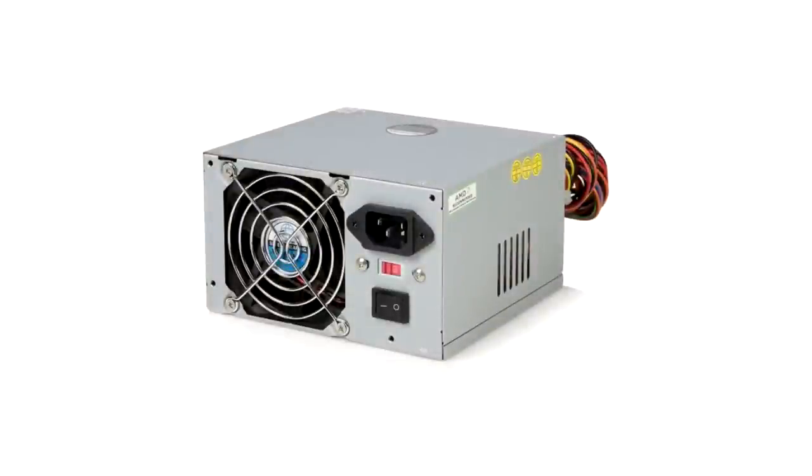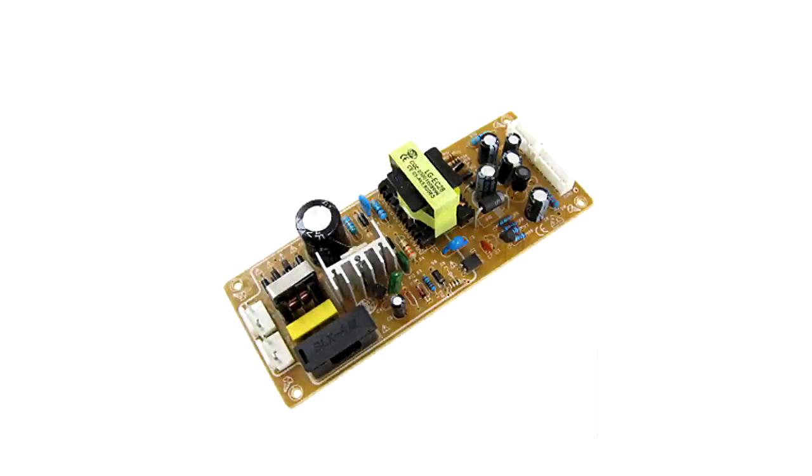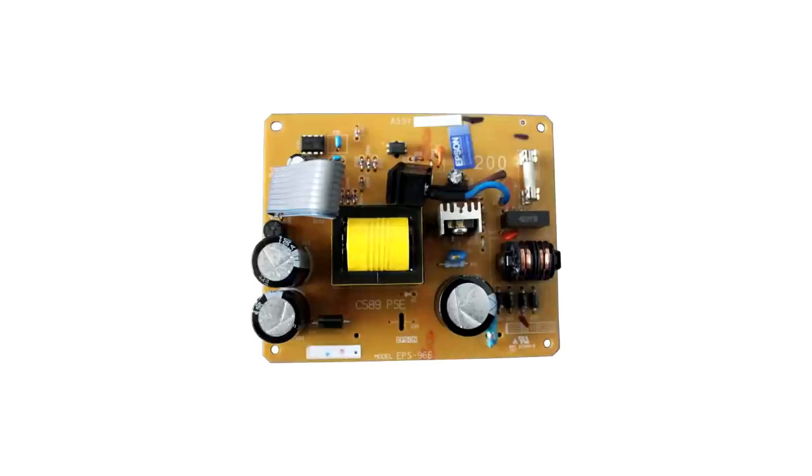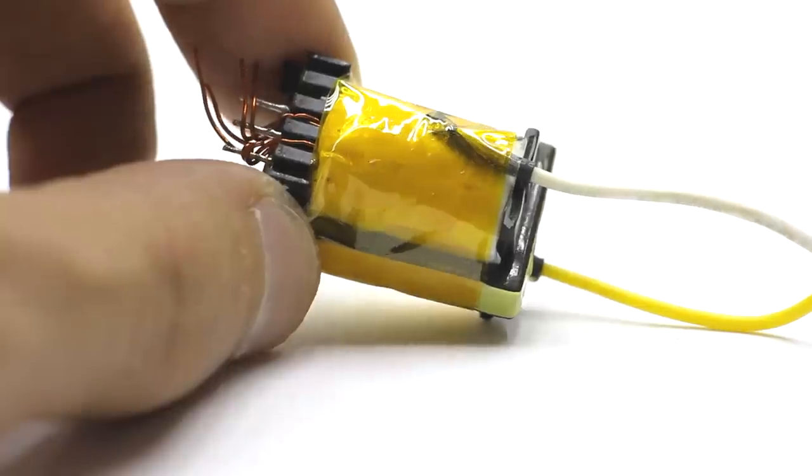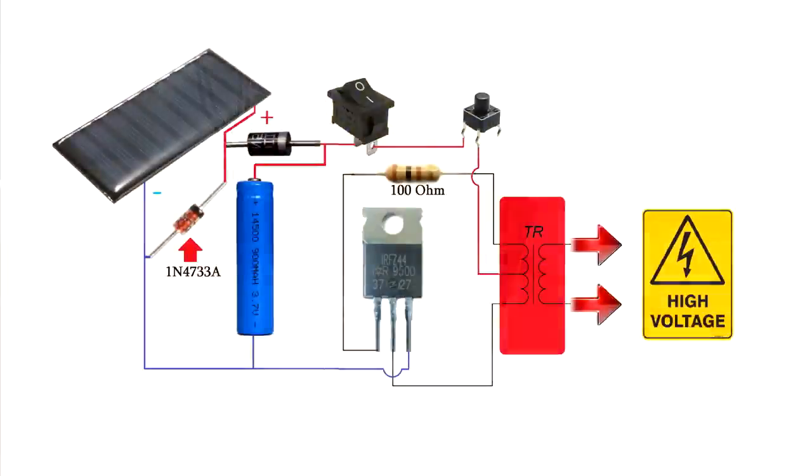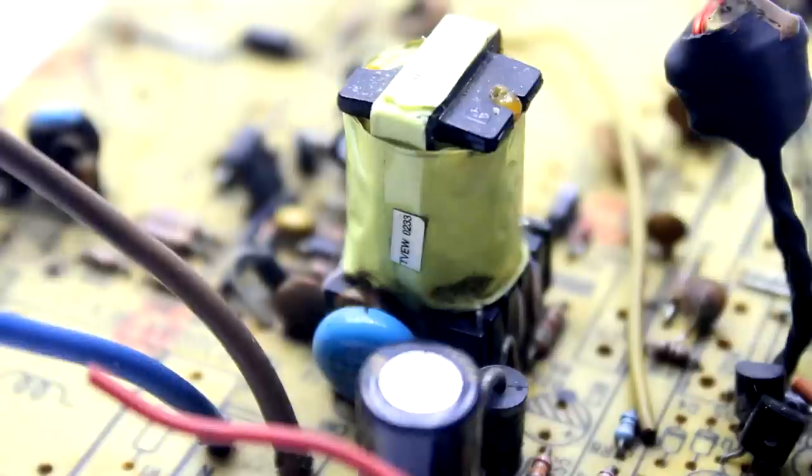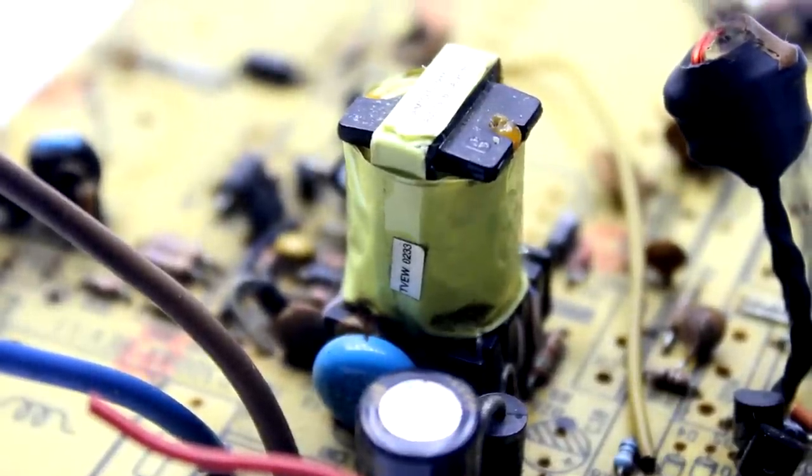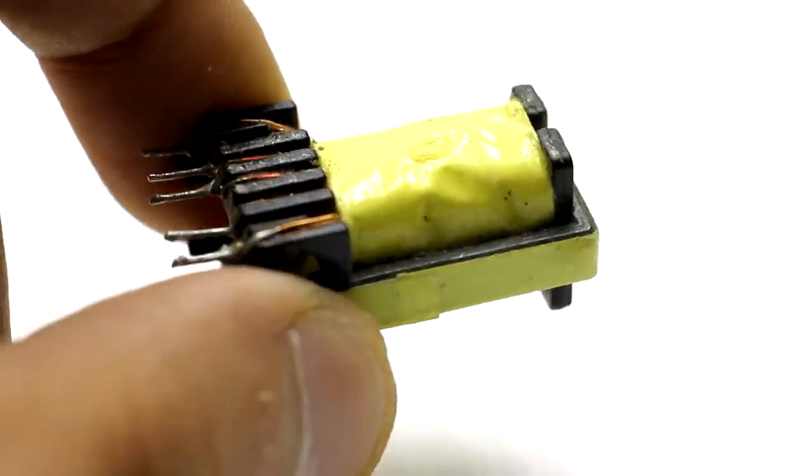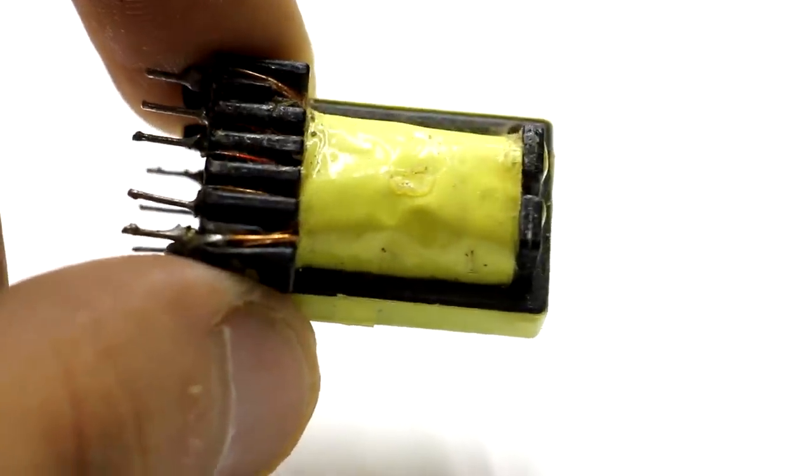We need any dead computer power supply or other power sources in which we could find a pulse transformer, for example from a DVD or a printer. The transformer will be the basis of everything. On its base, the boost converter is built. My transformer is taken from the non-working computer power supply unit. It is desirable that it be of an elongated type like mine. It's easier to wind.